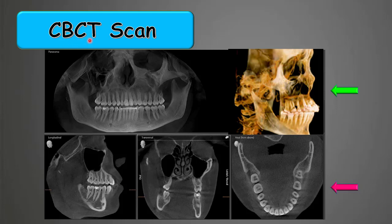CBCT stands for Cone Beam Computed Tomography, which is a sectional radiography. The system rotates around the patient's head, similar to the panoramic machine, and gives us three-dimensional and sectional radiography with much more detail. It is used for evaluating bone disease, the nasal cavity, sinuses, tumors, and especially the relationship of impacted lower wisdom teeth with the nerve.